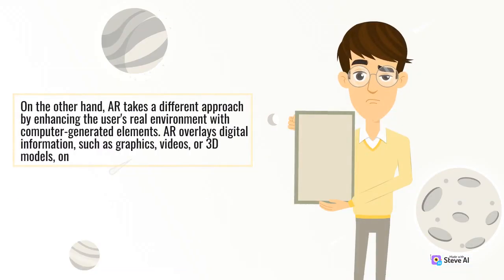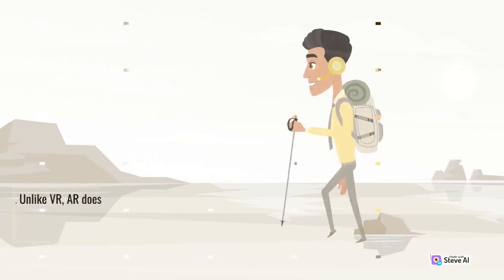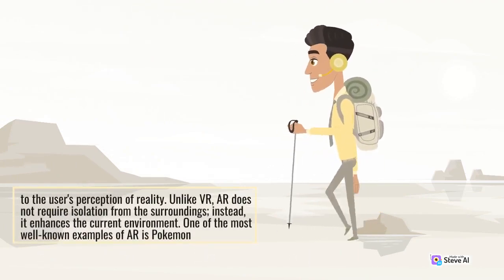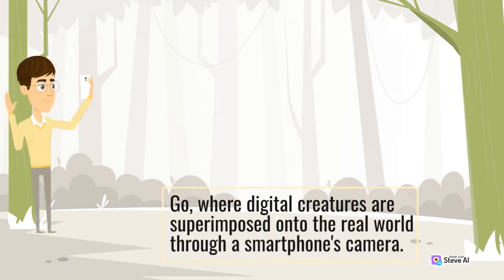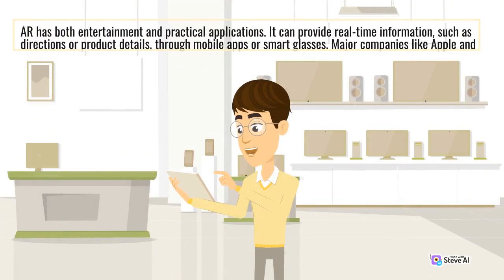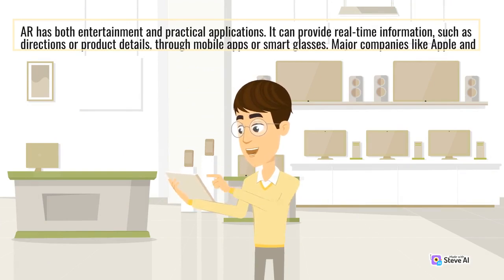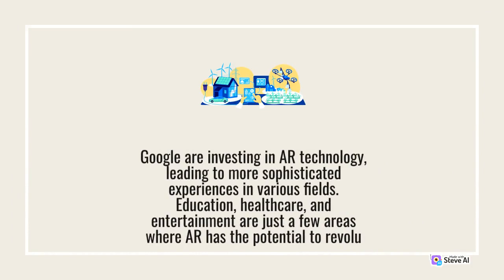AR takes a different approach by enhancing the user's real environment with computer-generated elements. AR overlays digital information, such as graphics, videos, or 3D models, onto the user's perception of reality. Unlike VR, AR does not require isolation from the surroundings; instead, it enhances the current environment. One of the most well-known examples of AR is Pokemon Go, where digital creatures are superimposed onto the real world through a smartphone's camera. AR has both entertainment and practical applications — it can provide real-time information such as directions or product details through mobile apps or smart glasses. Major companies like Apple and Google are investing in AR technology, leading to more sophisticated experiences in fields including education, healthcare, and entertainment.